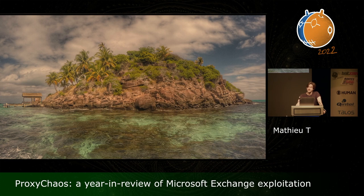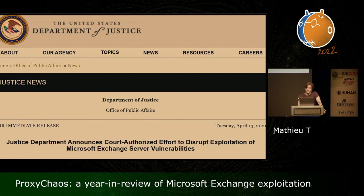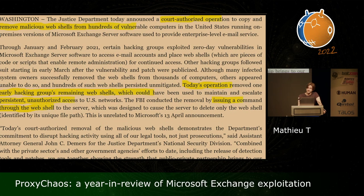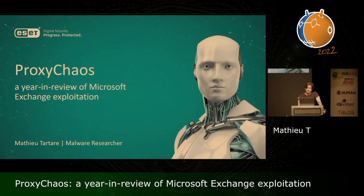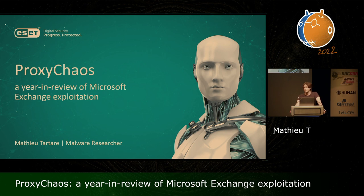Unless you were living on a desert island with no internet access during the last year, you have probably heard about quite some big issues around Microsoft Exchange. The attacks were deemed so important by the FBI that they decided to remove themselves the malicious web shells on compromised servers located in the US. In this presentation, I'm going to present a year in review of Microsoft Exchange exploitation, and I will discuss both the ProxyLogon and the ProxyShell vulnerabilities and their variations. We will discuss how multiple cyber espionage groups abused these vulnerabilities to take over thousands of mail servers, in particular in March and August.